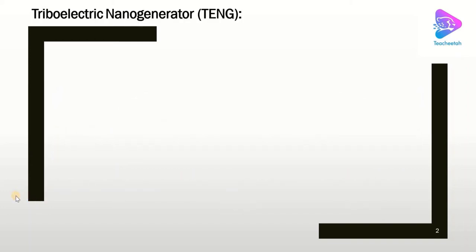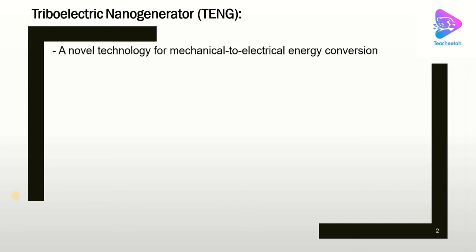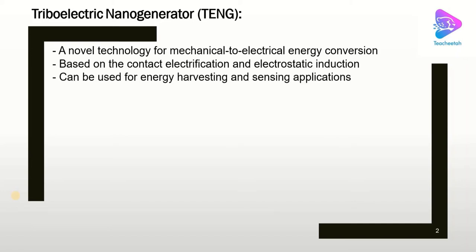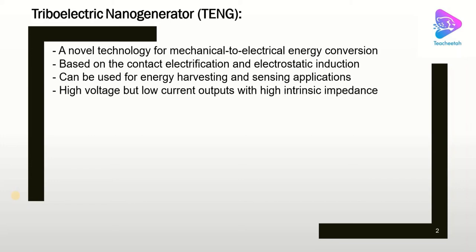So what is a triboelectric nanogenerator, or TNG? TNG is a novel technology for conversion of mechanical energy to electrical energy. The TNG is based on contact electrification of two dissimilar materials and then electrostatic induction. It has been applied for different types of applications such as energy harvesting for low power electronics and sensing. The TNG has a very high voltage output but a very low current output and the intrinsic impedance is super high. The TNG may also need a circuit design for practical applications.